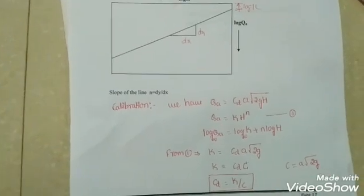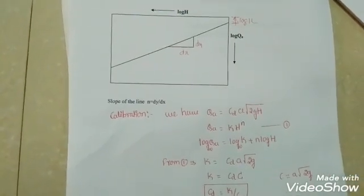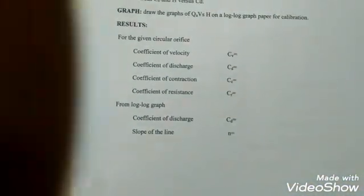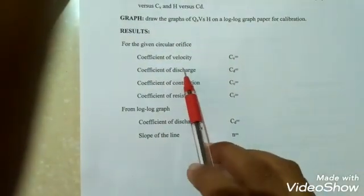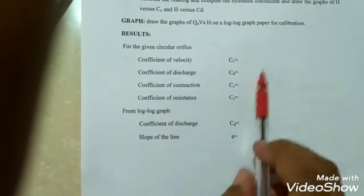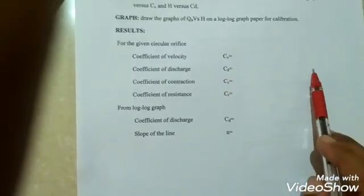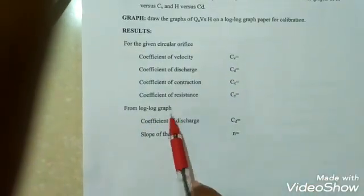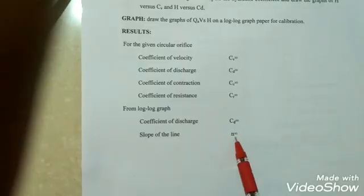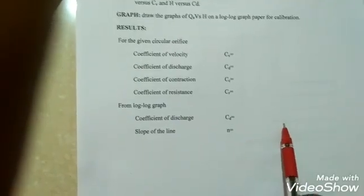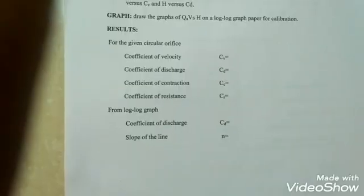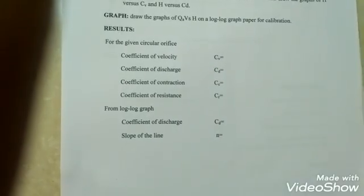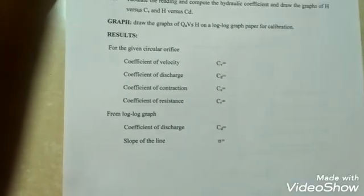After this, show the results of the experiment. These include the coefficient of velocity, coefficient of discharge, coefficient of contraction, and coefficient of resistance obtained from the tabular column. From the log-log graph, also mention the CD value and the slope value. This completes the procedure to find out the coefficients of the circular orifice. Thank you.